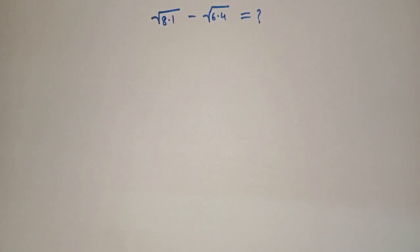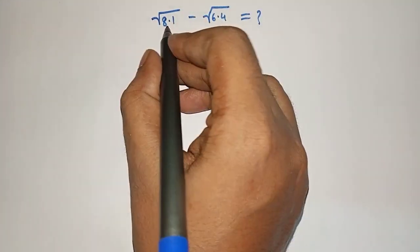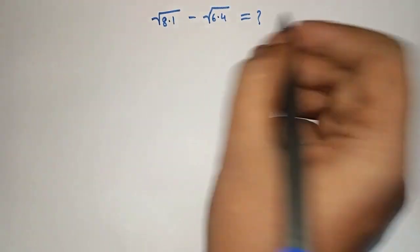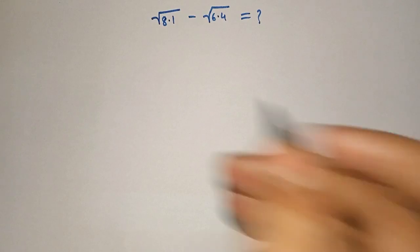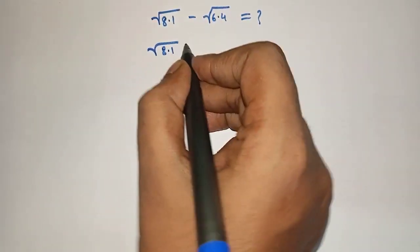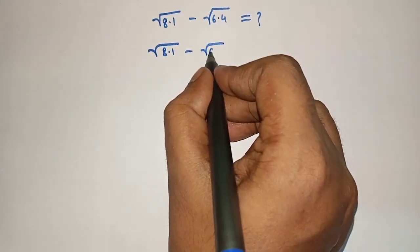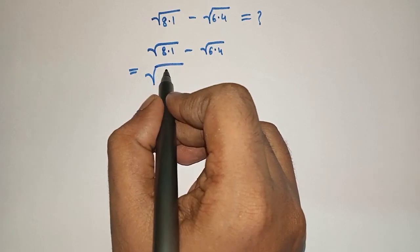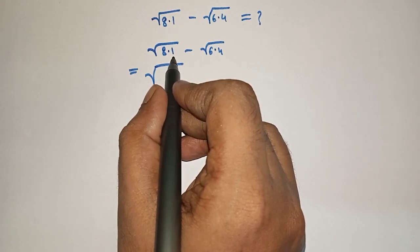Hello friends, welcome to Aha Math. Square root of 8.1 minus square root of 6.4 equals what? Let's solve. Square root of 8.1 can be written as square root of 81 by 10.